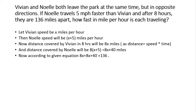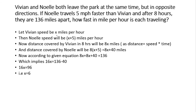Now solving the equation: 8x plus 8x plus 40 equals 136, so 16x equals 136 minus 40, which gives 16x equals 96. Therefore x equals 6. Since x was Vivian's speed, Vivian's speed is 6 miles per hour. Noel's speed is x plus 5, which is 6 plus 5.